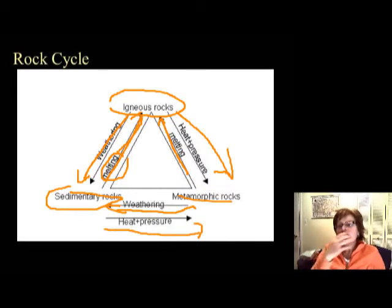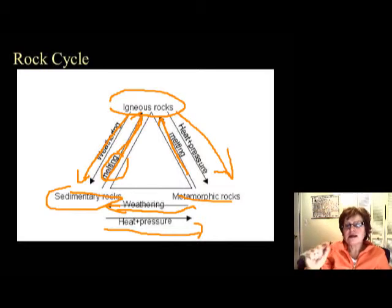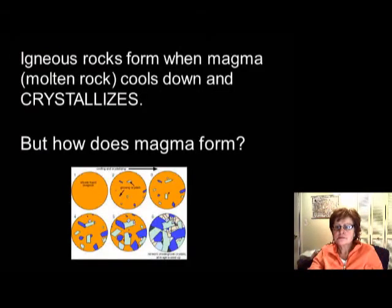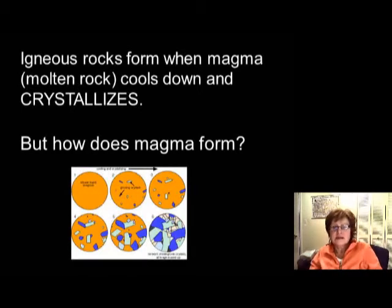So that's very simple. I will ask this on the test, so you should really know it and make sure that the arrowheads are going the right way. Igneous rocks form when magma, which is basically molten rock, cools down and crystallizes.